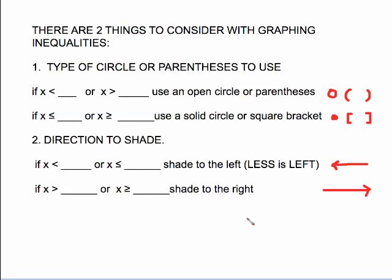When graphing inequalities, there are only two things to consider. First, decide what notation to put at the number: open circle or parentheses, or solid circle or bracket, depending on your book. If it's plain less than or greater than, use the open circle or parentheses. If it's less than or equal to or greater than or equal to, use the solid circle or square bracket. The only other thing is the direction of shading: less than or less than or equal to means shade to the left — remember, less is left. Greater than or greater than or equal to means shade to the right.